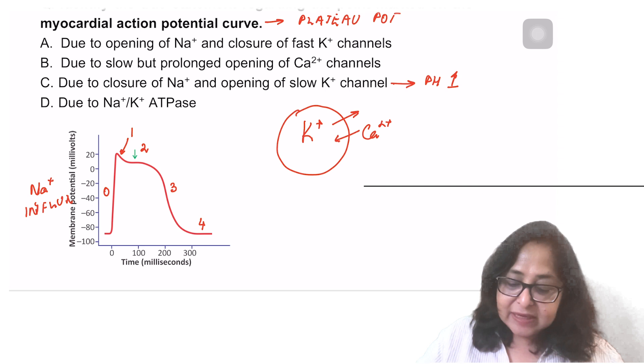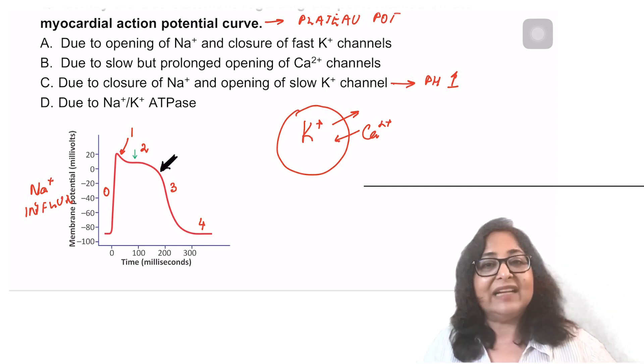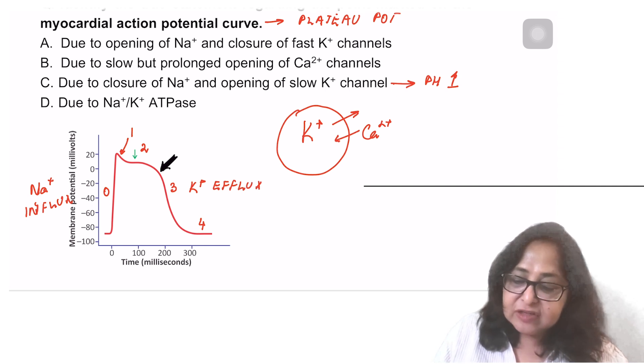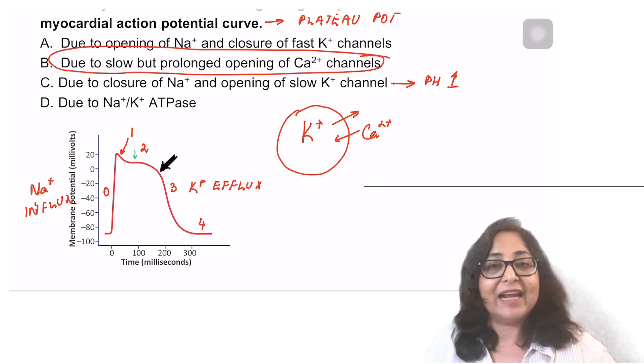Basically there is loss of positive charge and there is gain of positive charge. So there will be no change in potential and you get a horizontal line, which is the plateau phase. Then at this point, which I have marked with a black arrow, the calcium channels close. And in phase 3, I only have a potassium efflux. So the plateau phase is due to a slow but prolonged opening of the calcium channels.